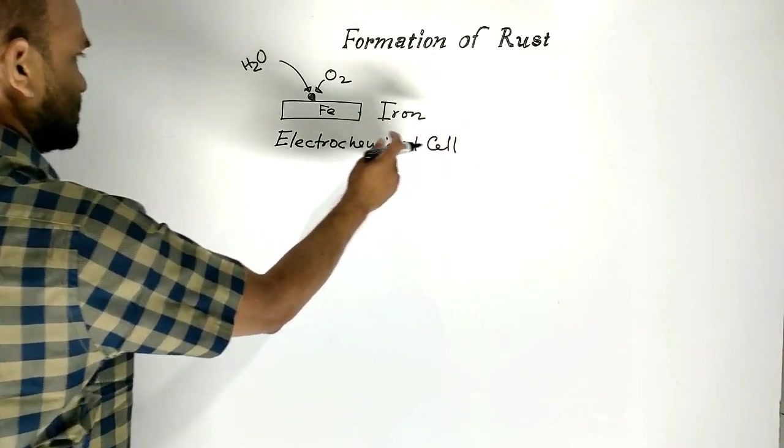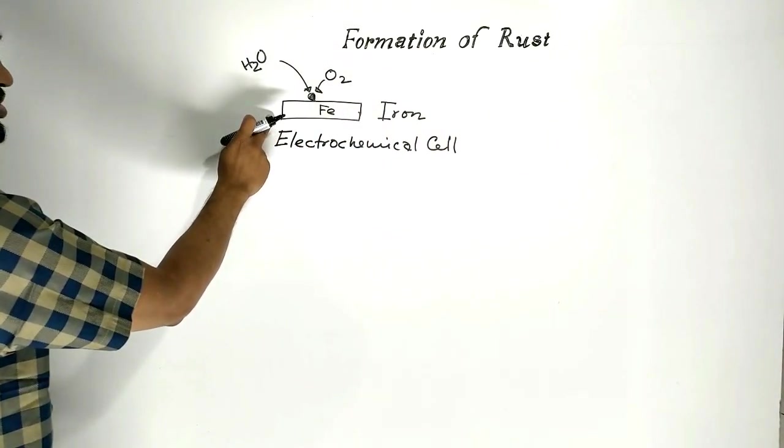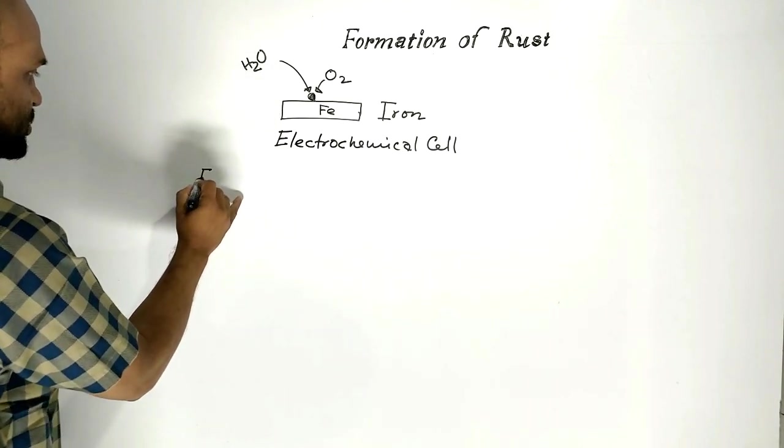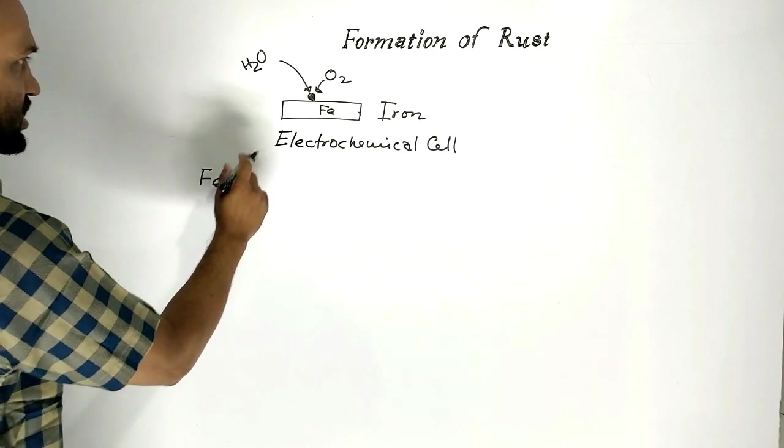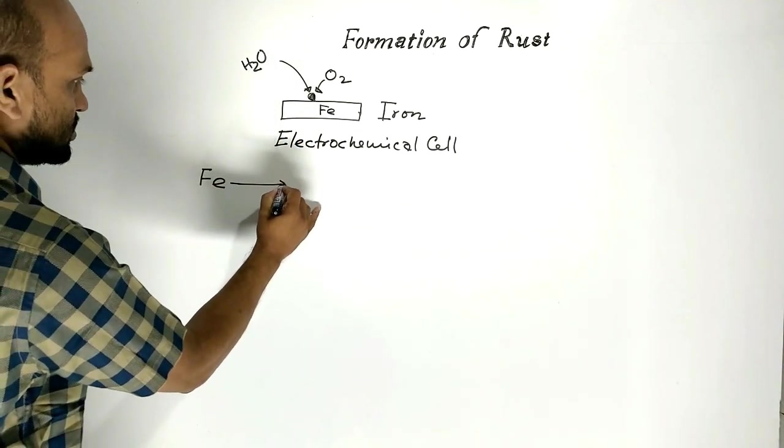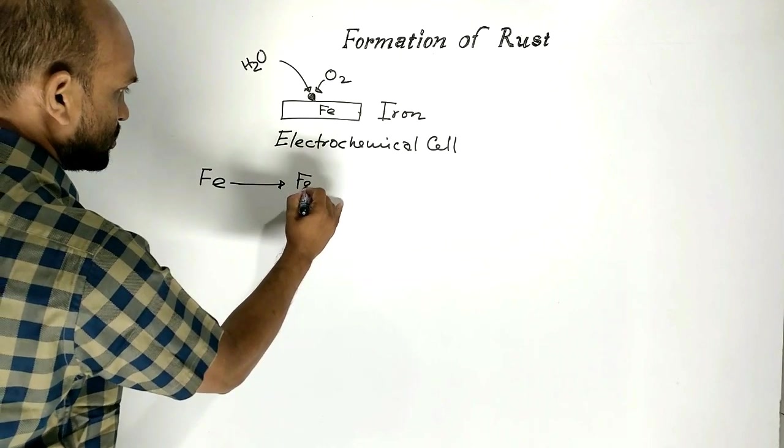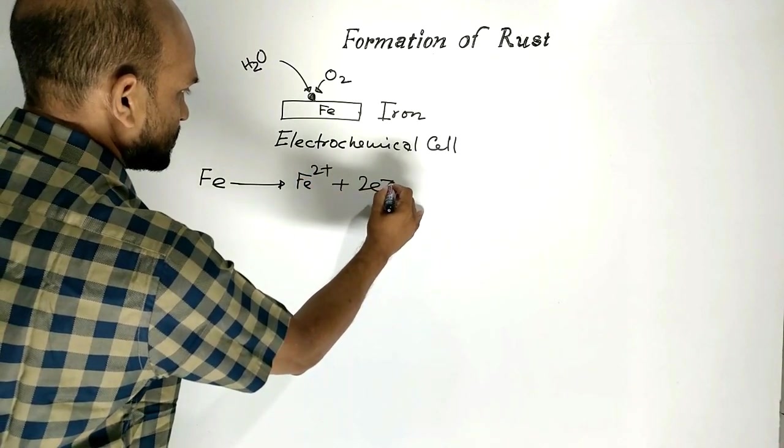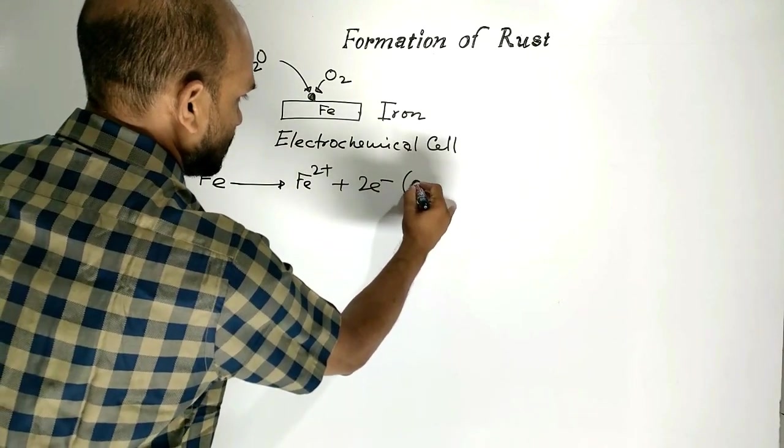In which oxidation and reduction occur. First, iron releases two electrons, which is oxidation.